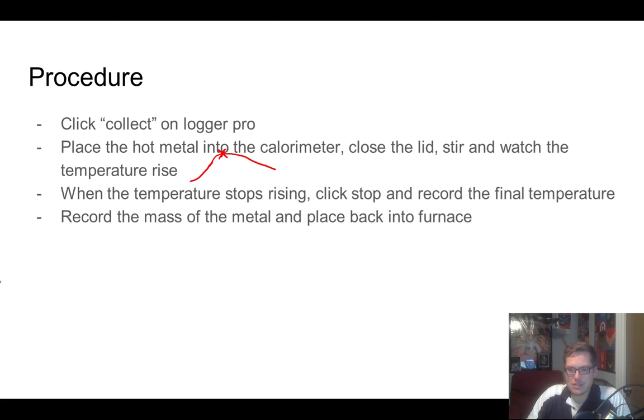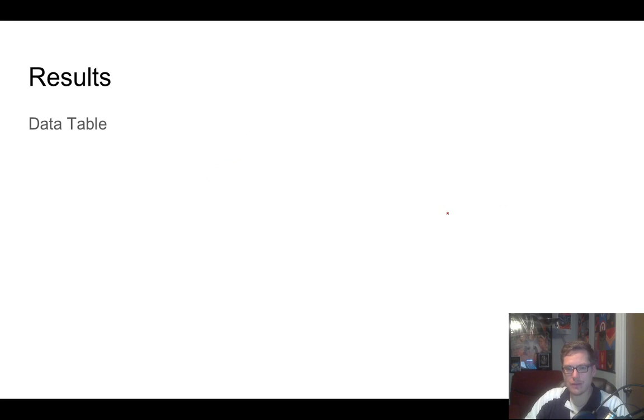So when it stops rising, you can click stop. Honestly, if we get a graph like this, just record this guy up here, and you can just get a nice graph, and really, you want this high temperature. So the final temperature, really, it's the high temperature that we want. And then you can, once it's all cooled down, pull your metal piece out, and you need to get the mass of that metal piece on a balance. And then once you've done that, you can place it back in the furnace for the next hour to use. And that's really it for the procedure. Pretty simple.